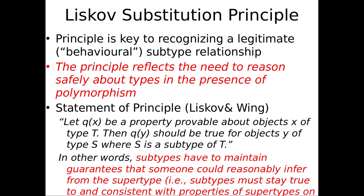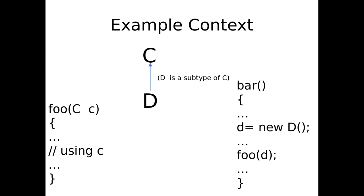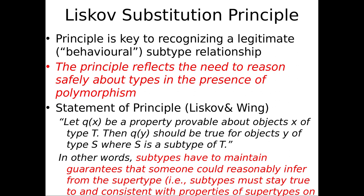The principle sounds a bit abstract: let Q of X be a property provable about objects X of type T (the supertype). Then Q of Y should be true about objects Y of the subtype of T. So if we have some property guaranteed for C, D needs to maintain that property. Any instance of D also has to observe the same regularities as C, because it can be passed around like a C — it can masquerade as a C. Subtypes have to maintain guarantees that someone can reasonably infer from the supertype; they have to stay true to the promises of the supertype.